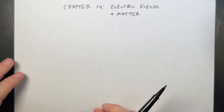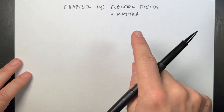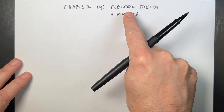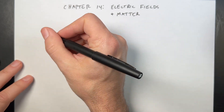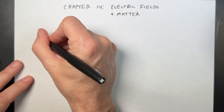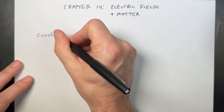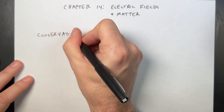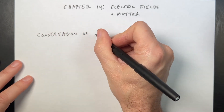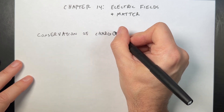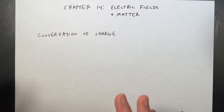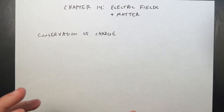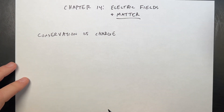In chapter 13 we talked about the electric field due to point charges and dipoles. In this chapter we're talking about electric fields and matter. The first thing they want to talk about is the idea of conservation of charge. This chapter is very conceptual. There's not a lot of problems in here, but it's important for stuff later, because the name of the textbook is Matter and Interactions — so this is the matter part.